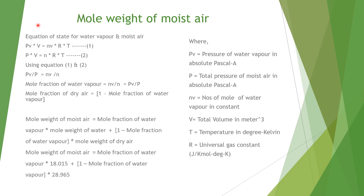Now, the mole weight of moisture: using the equation of state for water vapor, PV times V equals NV times R times T (equation 1), and P times V equals N times R times T (equation 2). Using equations 1 and 2, PV divided by P equals NV divided by N. Since NV upon N is a mole fraction, the mole fraction of water vapor equals PV divided by P, which is the partial pressure of water vapor divided by total pressure. The mole fraction of dry air is therefore 1 minus the mole fraction of water vapor.